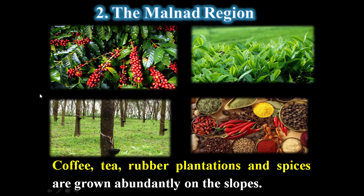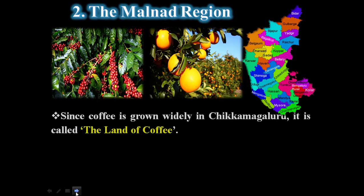Malnad region is very famous for coffee, tea, and rubber plantations. Spices are also grown abundantly on the slopes of Malnad region. Since coffee is grown widely in Chikkamagaluru, it is called the land of coffee.